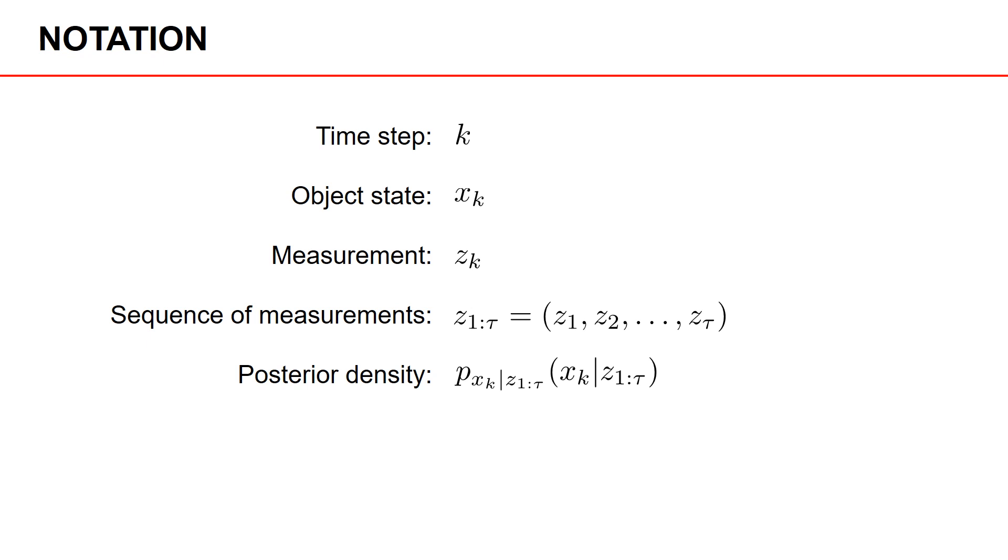Posterior densities are denoted by p. For the sake of clarity, we have put sub-indexing on p here, so that it's clear what density we refer to. Here, we have the density for the state x at time k, given measurements from time one to time tau. However, if it's clear from context what density we mean, then for brevity, we're going to skip this sub-indexing, as you can see on the right-hand side of the equality sign.